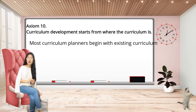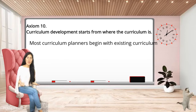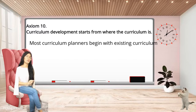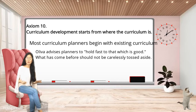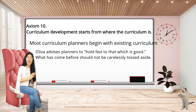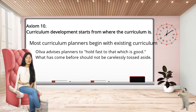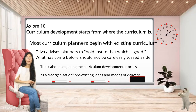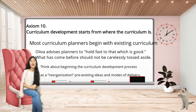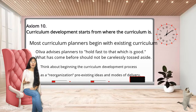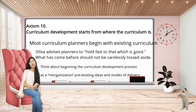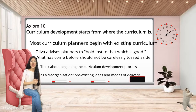The last axiom, Axiom 10: Curriculum development starts from where the curriculum is. Most curriculum planners begin with the existing curriculum. Oliva advises planners to hold fast to that which is good — what has come before should not be carelessly tossed aside. We have to think about the beginning of the curriculum development process as a reorganization of pre-existing ideas and modes of delivery. Remember in our first year when we were tasked to create our own philosophy of education — we used existing philosophies as references and inspiration. An existing design is a good starting point for any teacher who plans to enhance and enrich a curriculum.